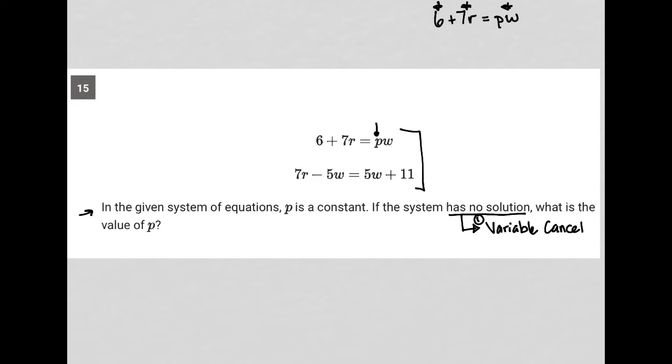Let's make sure the second equation is in the same order. It starts as 7R - 5W = 5W + 11. I'm going to simplify that and combine like terms.